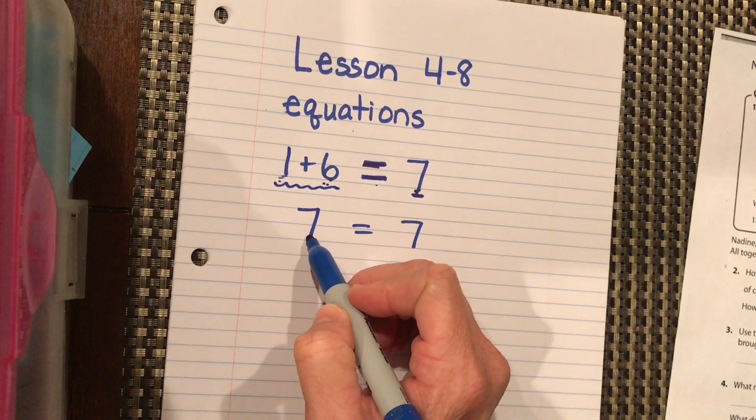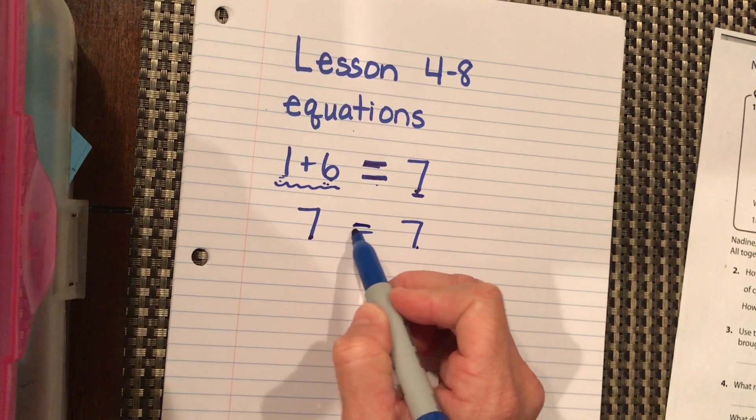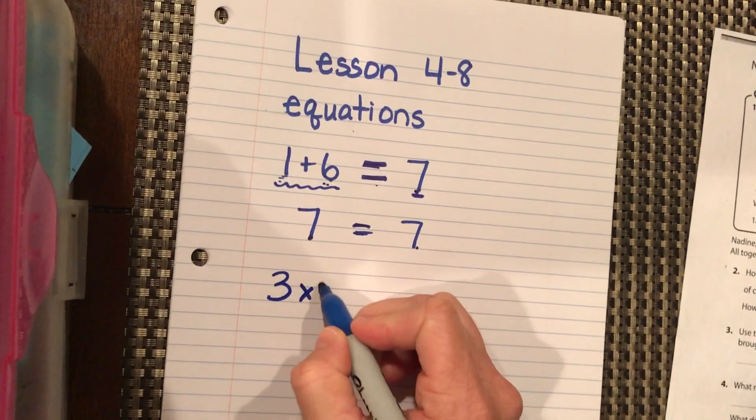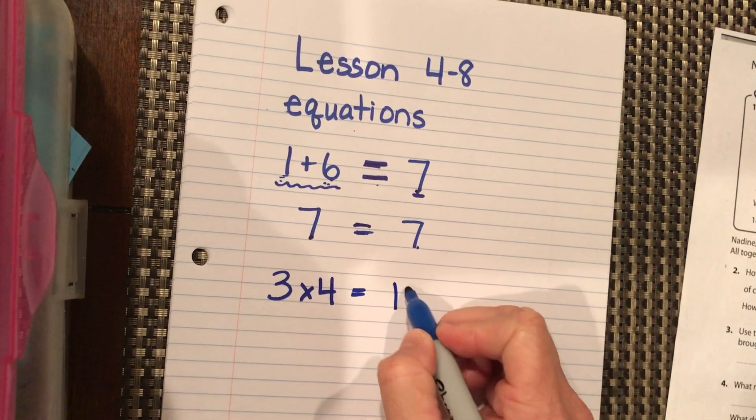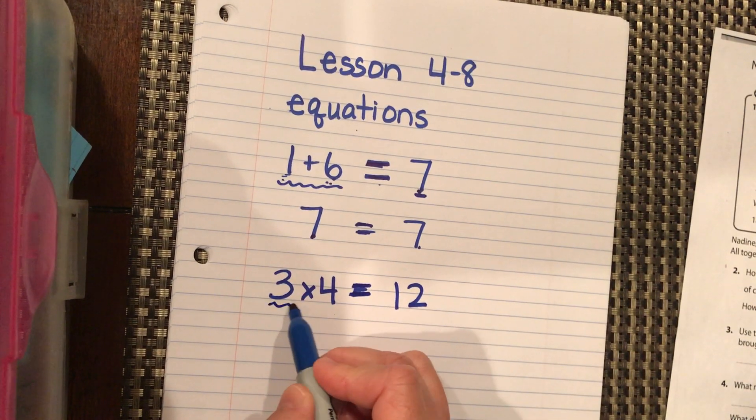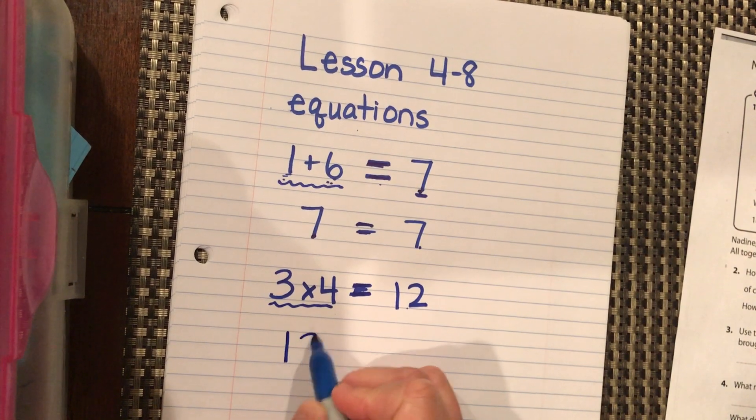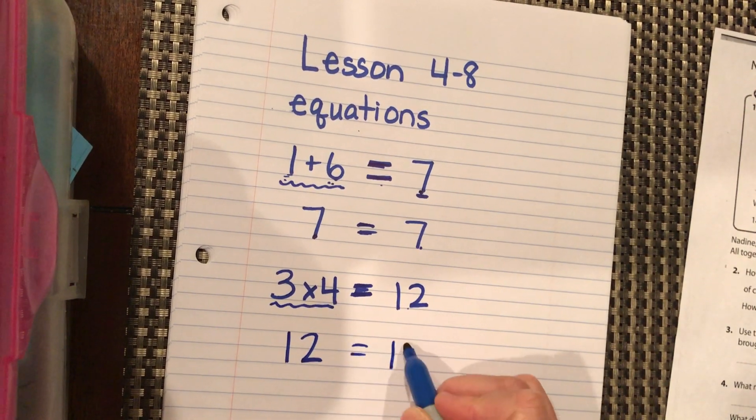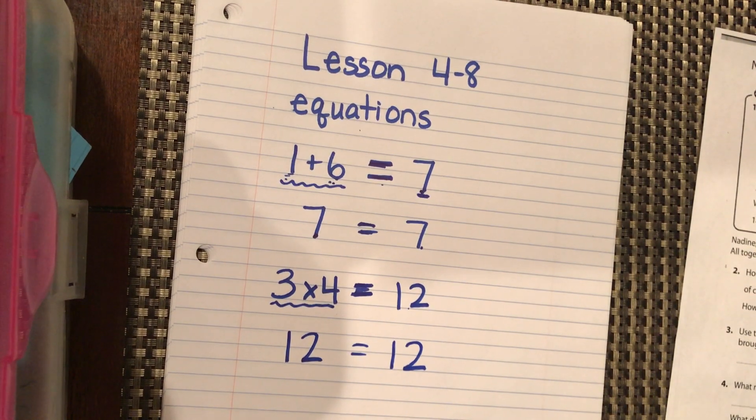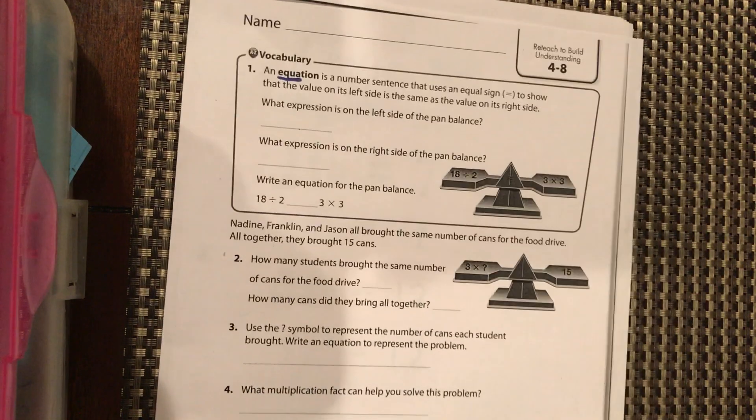So 1+6 has a value of 7, therefore 7 is equal to 7, and that's what that equal sign means. Just like when we write 3×4 = 12, this equal sign means this has the same value of that. 3×4 is truly the same value as what's on the other side.